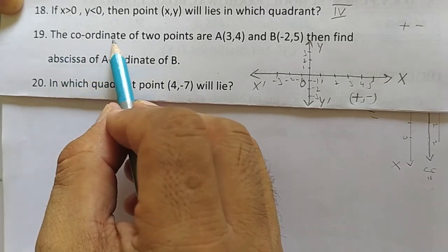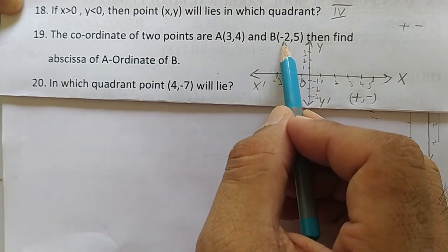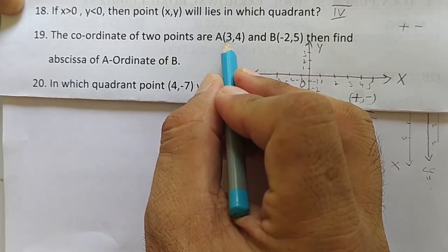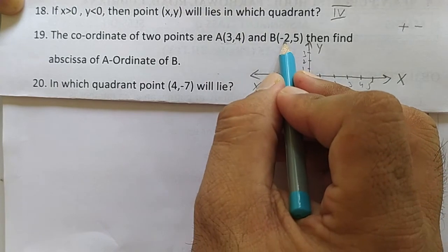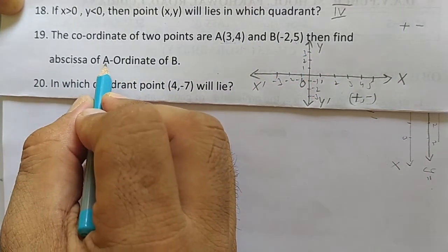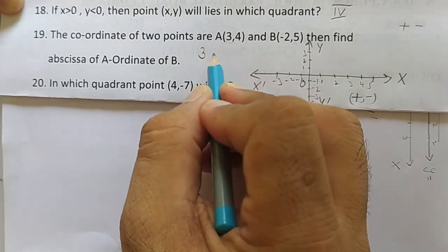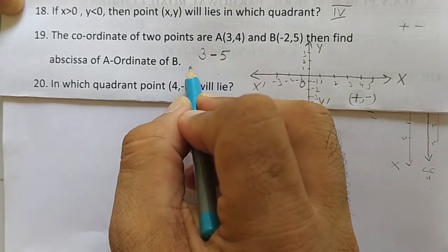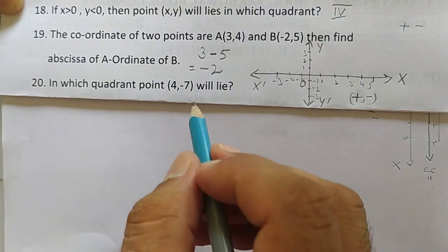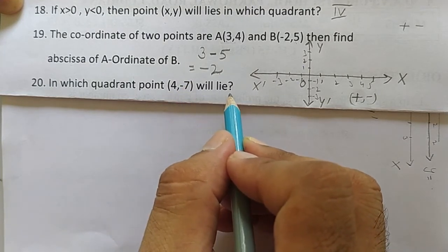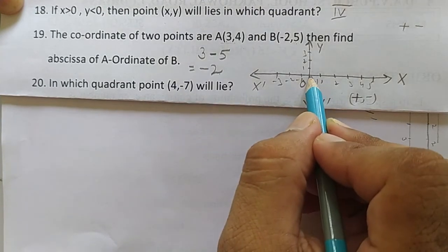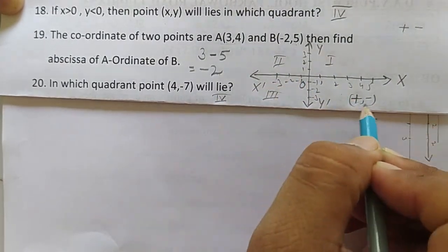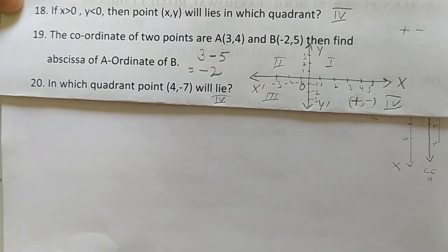Question 19: coordinates of A = (3, 4) and B = (−2, 5). Find abscissa of A minus ordinate of B. Abscissa of A = x-coordinate of A = 3; ordinate of B = y-coordinate of B = 5. So 3 − 5 = −2. Finally, point (4, −7): x is positive, y is negative → fourth quadrant. Thanks for watching!